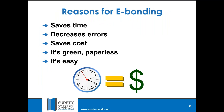E-bonding — you're going to hear an awful lot about it. The reasons are somewhat self-evident. Obviously there's going to be a savings of time over the traditional paper world of preparing and issuing bonds. Your chances of errors, which can result in non-compliant tenders, is greatly diminished because of the nature of the beast. Cost savings, of course, with savings on issuance and delivery. And our carbon footprint, or relative lack thereof — it is green. We're not killing any trees to do this. And finally, it's easy.